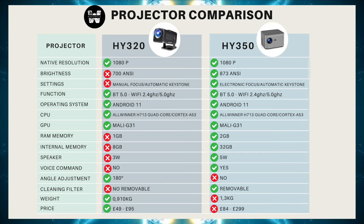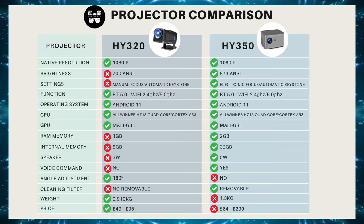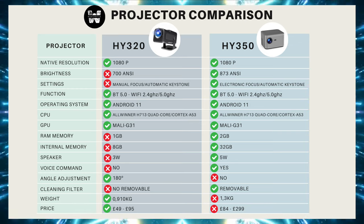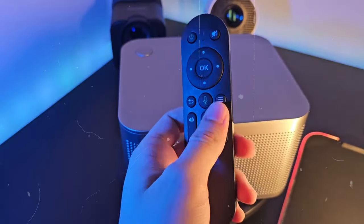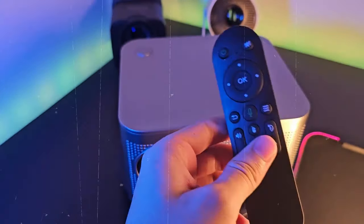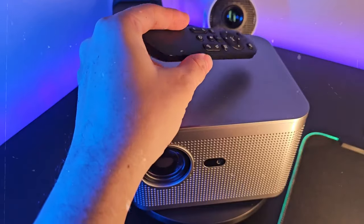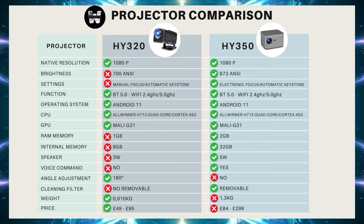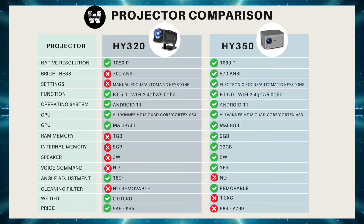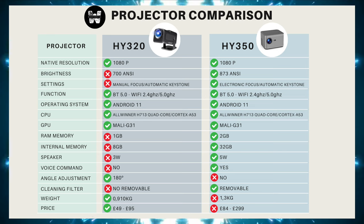The remote control of the HY350 is more comprehensive because it has voice commands and electronic focus adjustment. The HY320 uses the same remote as the HY300, and both are infrared. The projector has infrared inputs on the front and back, so you won't have a problem regardless of placement angle. Another point goes to the HY350.